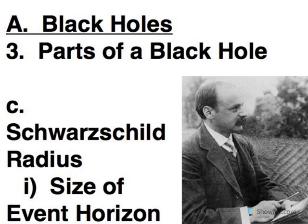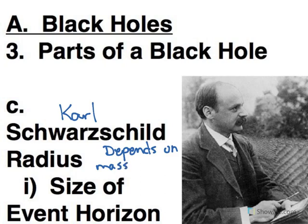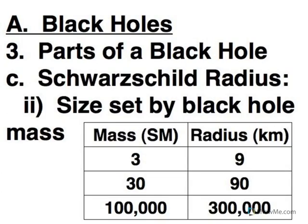How big the event horizon is was first determined by this guy, Carl Schwarzschild. And so now we call it the Schwarzschild radius. And it's based upon the mass of the singularity. And essentially, the bigger the mass, the bigger the event horizon.